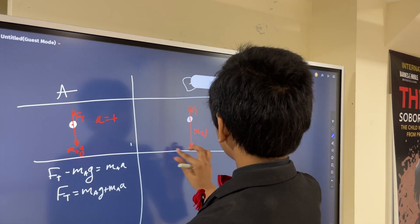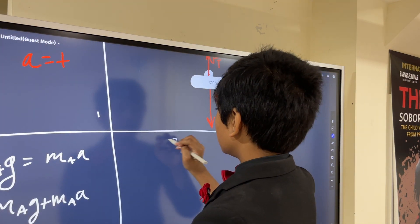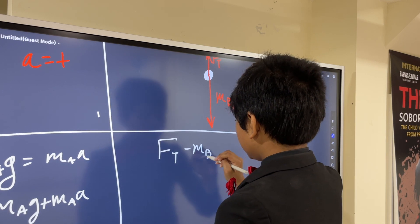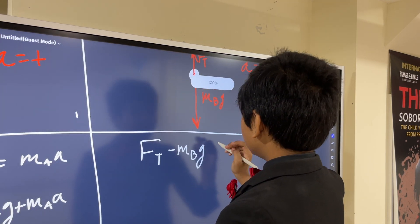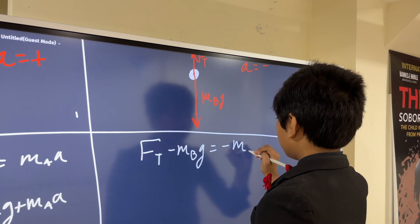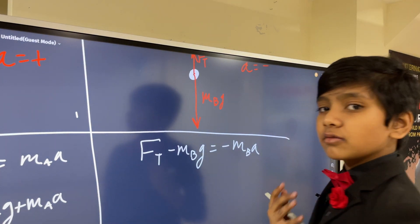So, now, what about this one? Well, A is negative here, so FT minus MBG, don't forget to switch over your variables, it's a different mass now, is equal to minus MBA, because our acceleration is negative.